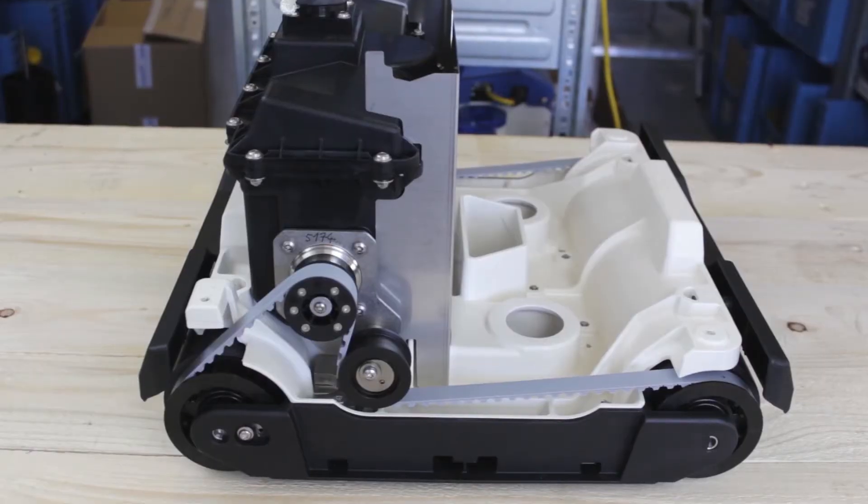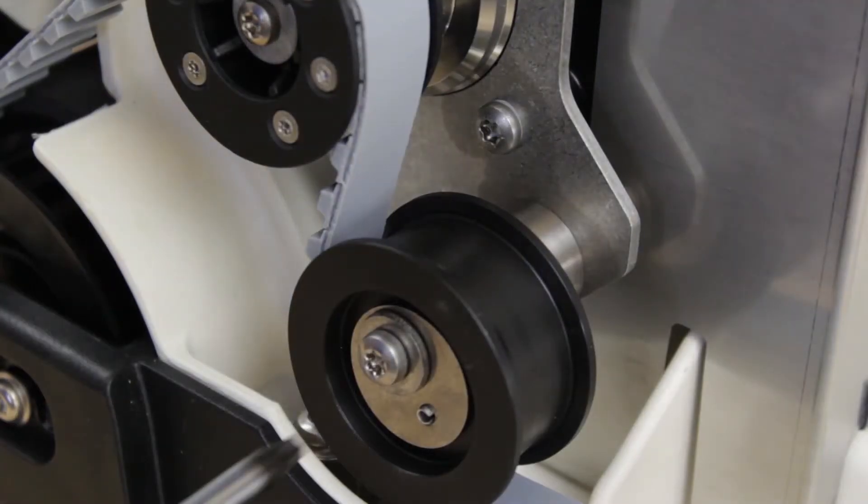Our device should now look like this. Next we take care of the clamping device. To do this we loosen the screw by about one quarter turn.